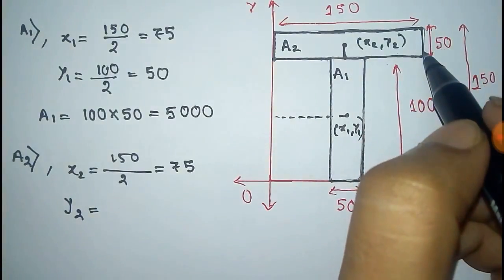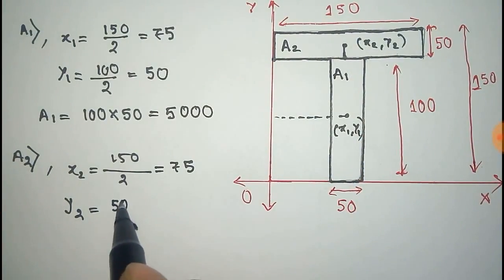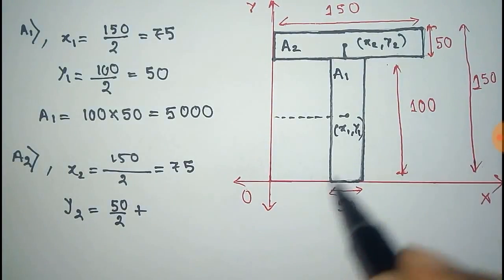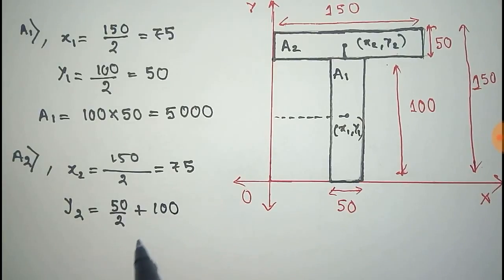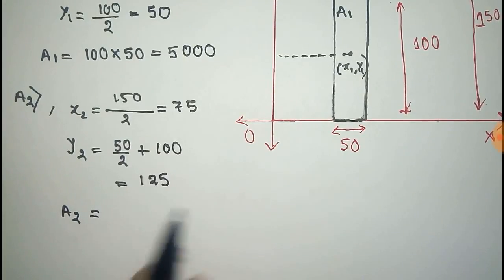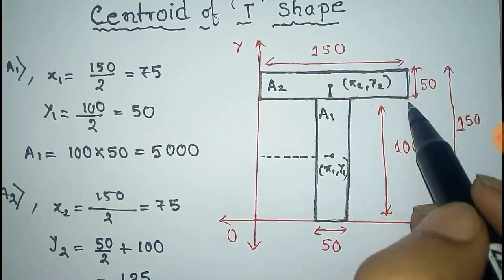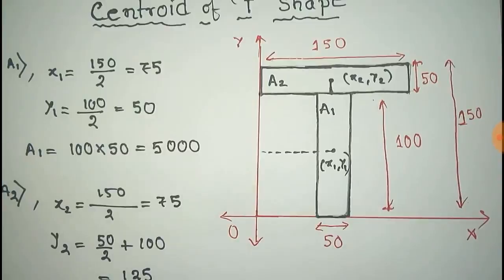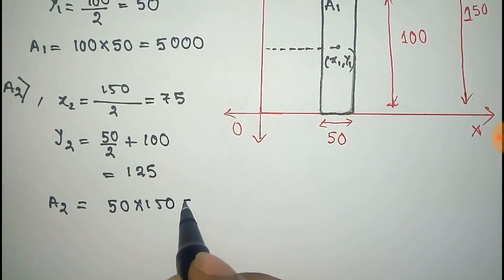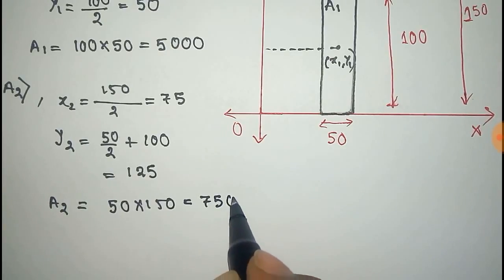For y2, the first part is 50 by 2, plus 100, because we have to take it with respect to the x-axis. So it will be 125. And the area A2 equals 50 times 150, which is 7,500 square units.